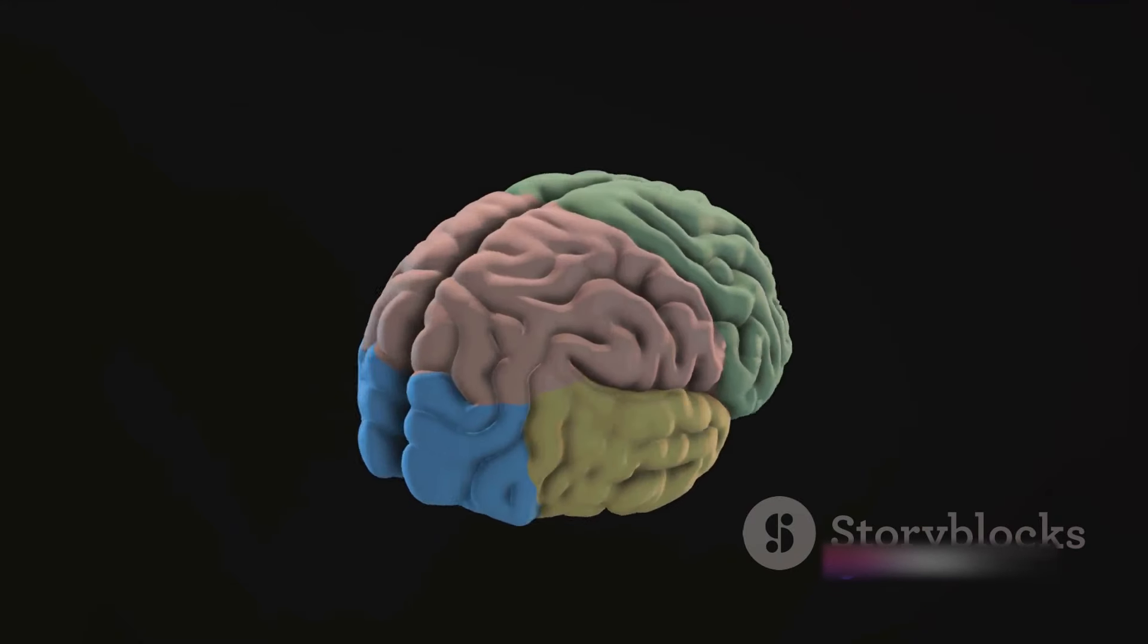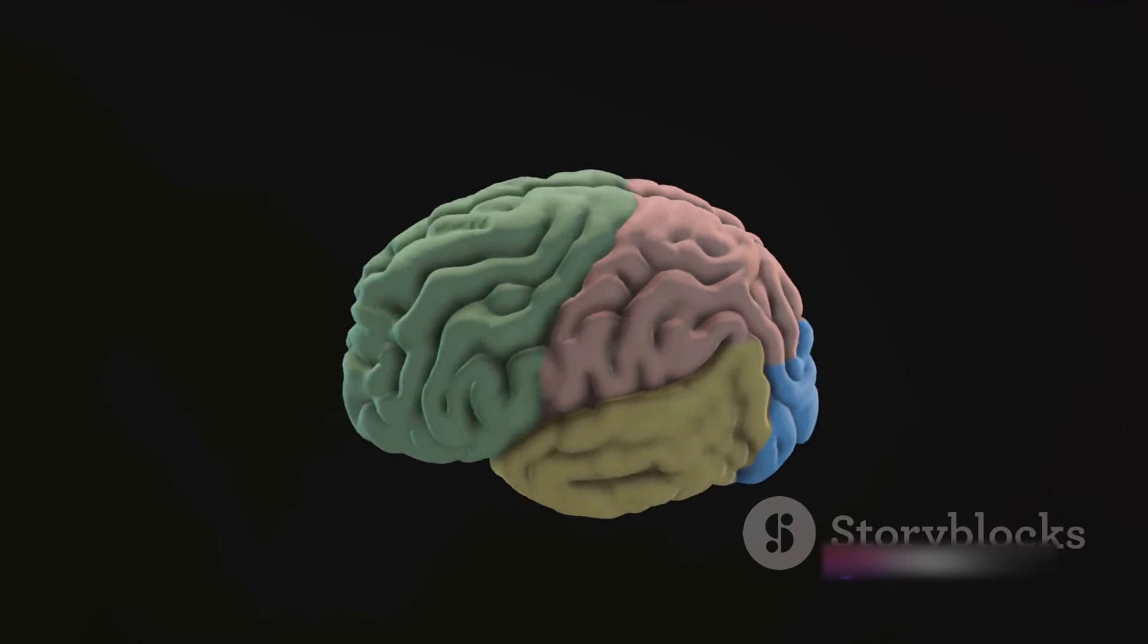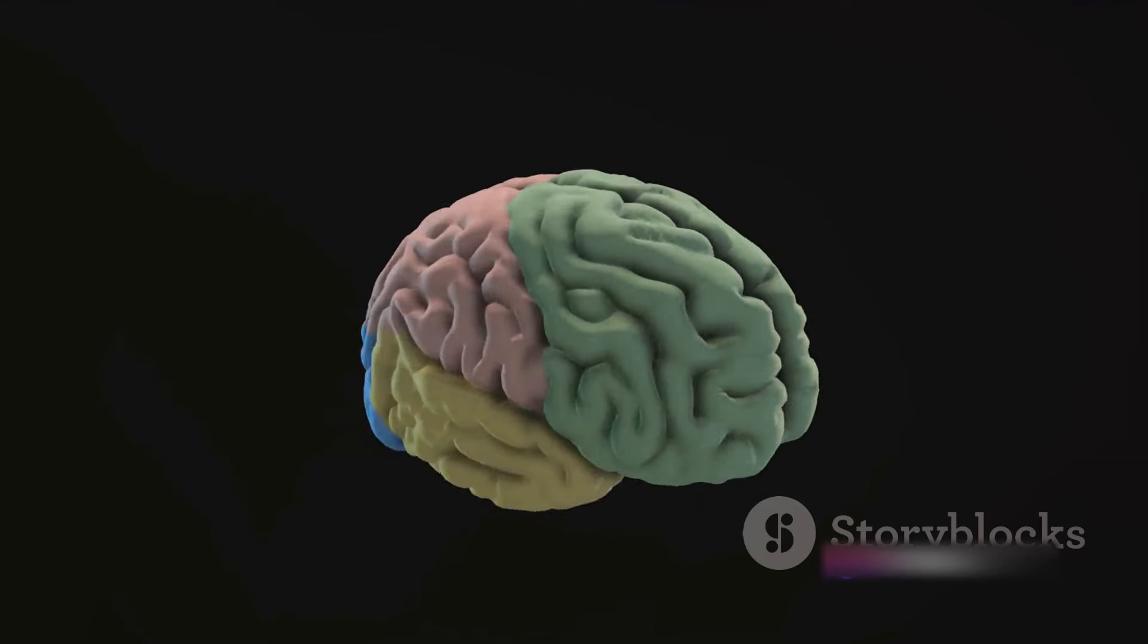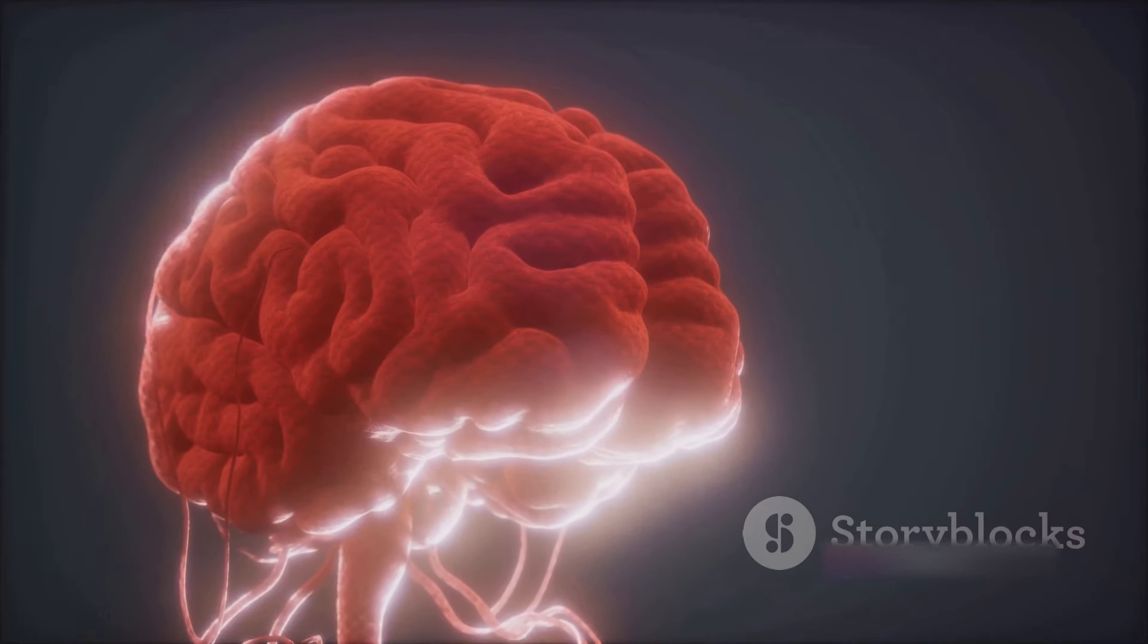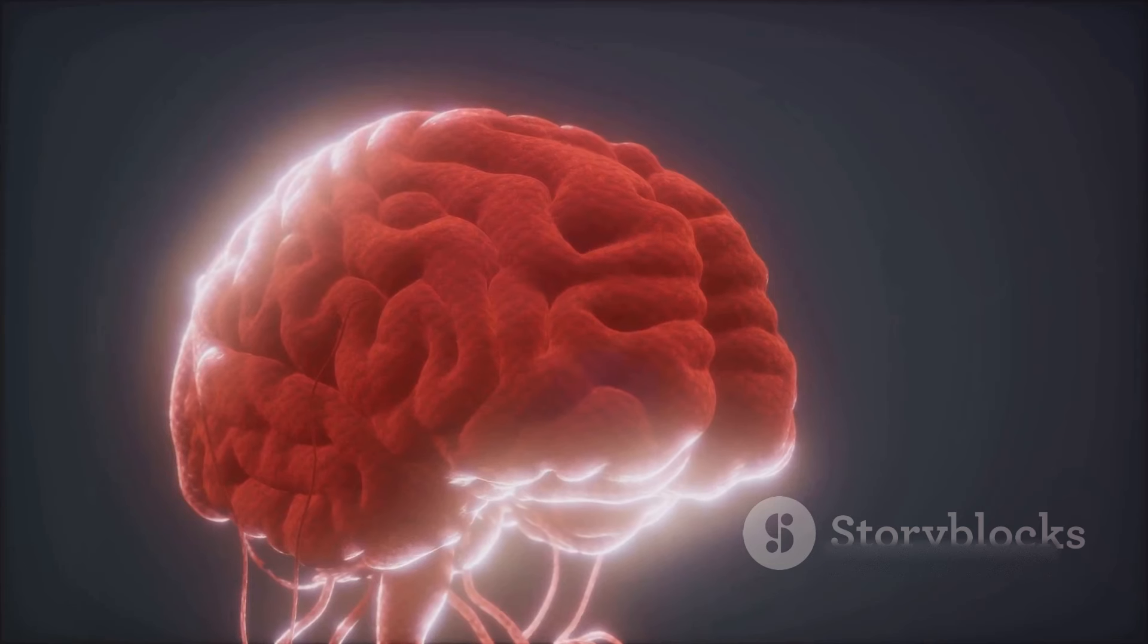The brain's basic structure consists of two main components, the cerebrum and the cerebellum. The cerebrum, the larger part, is responsible for higher brain functions, such as thinking, learning and consciousness.